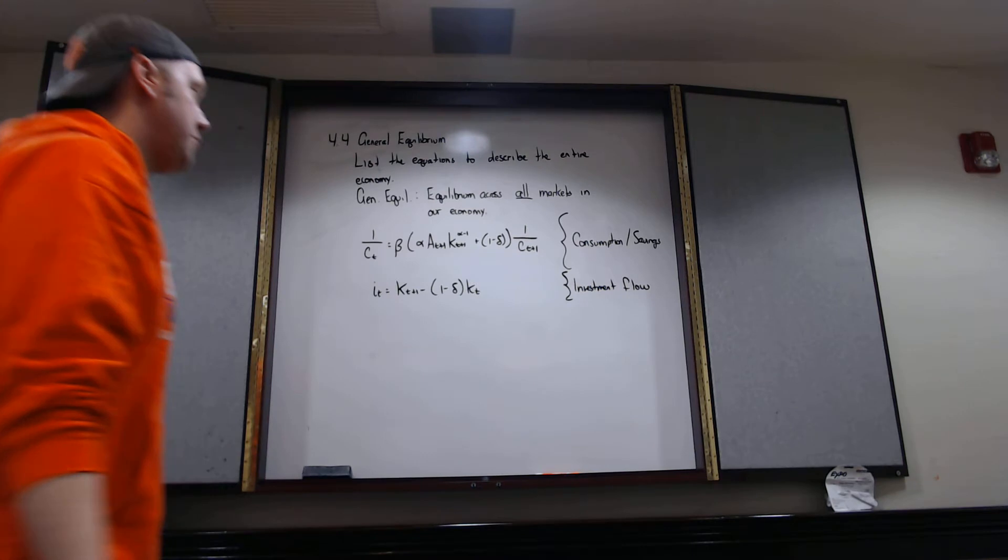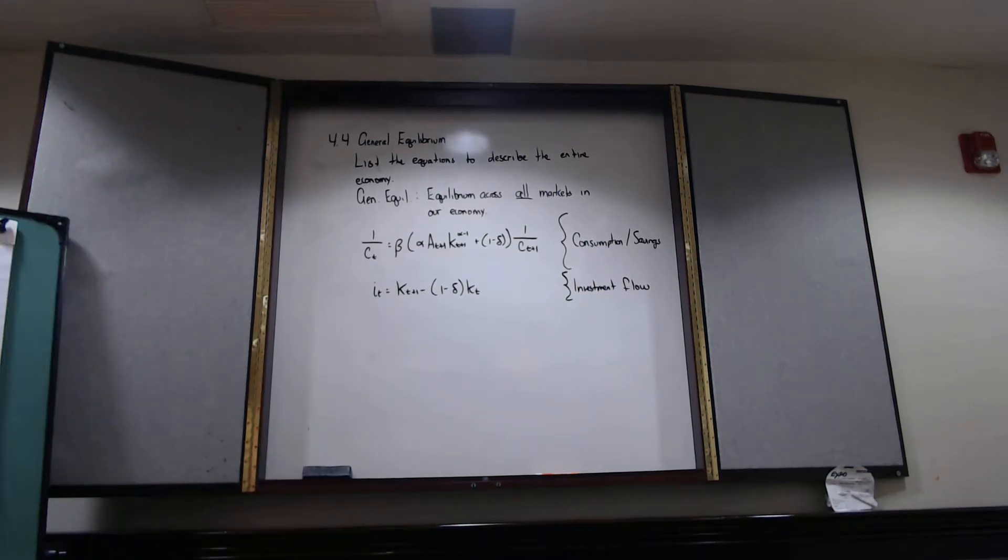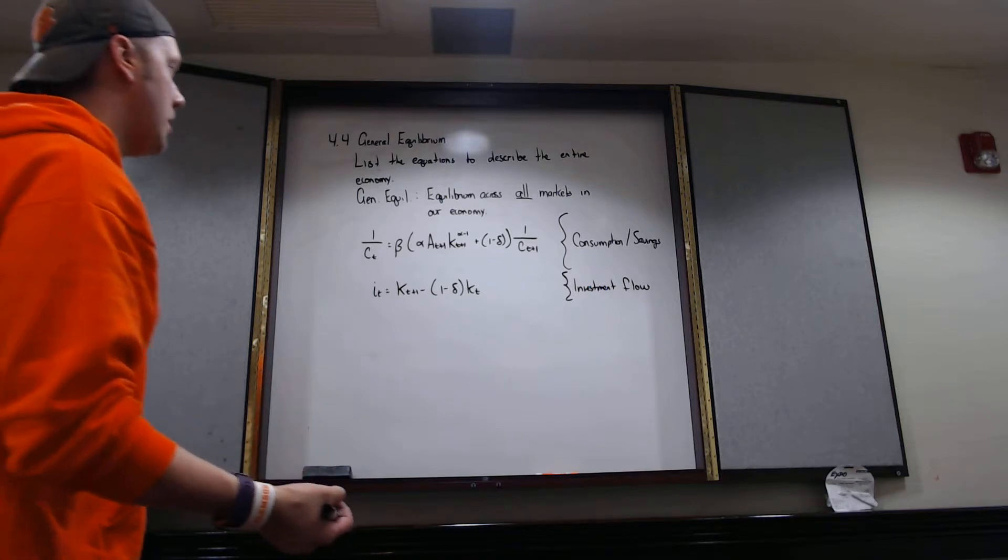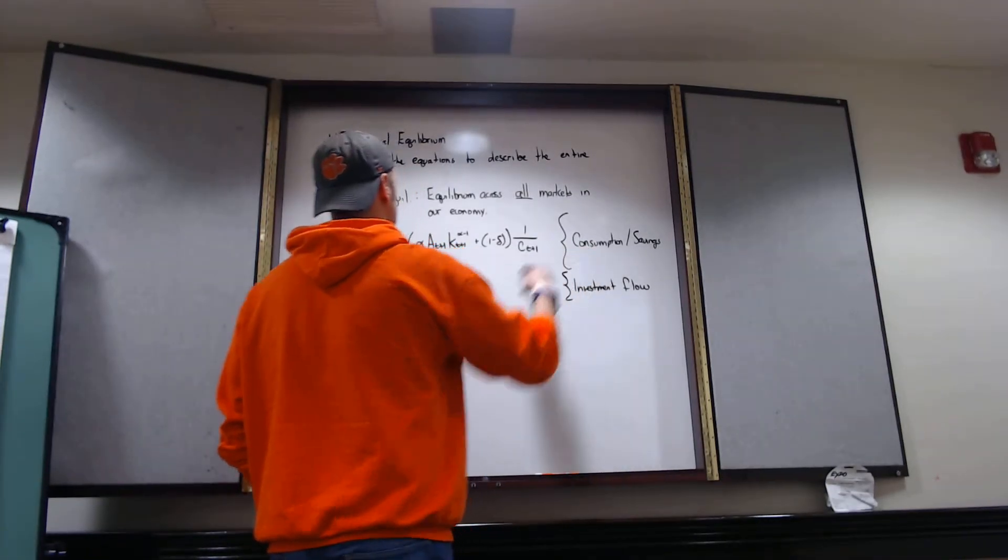That's going to be the investment flow. Well, the law of motion of capital, the flow of capital, is going to describe the way capital is evolving over time, which is going to determine how we want to consume or save.